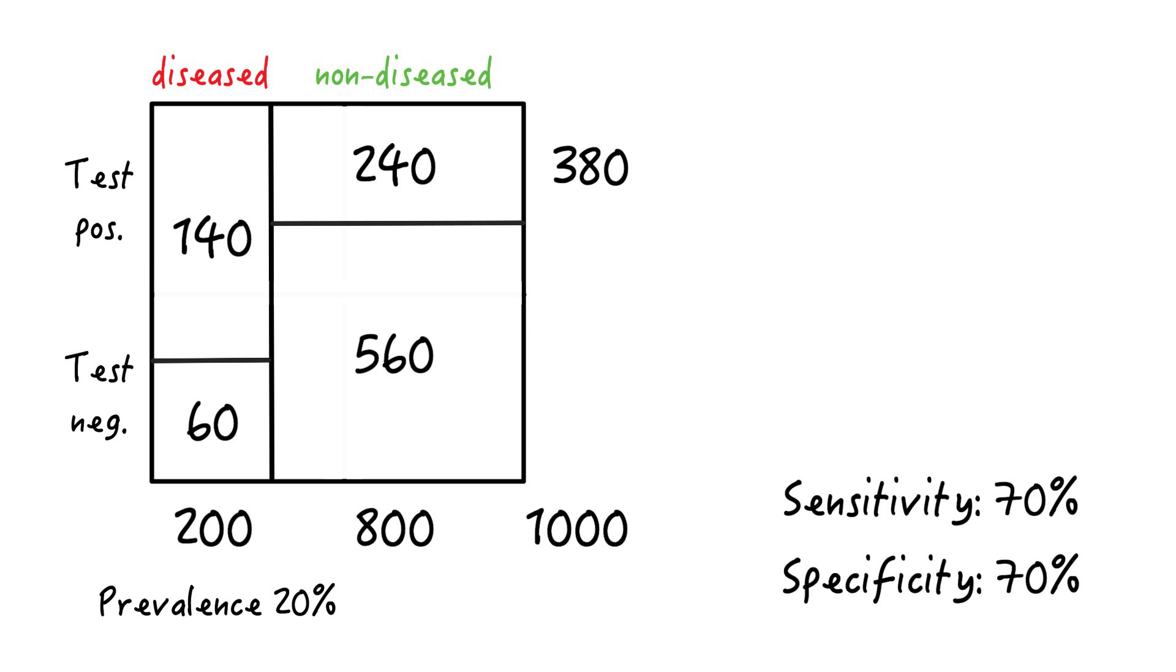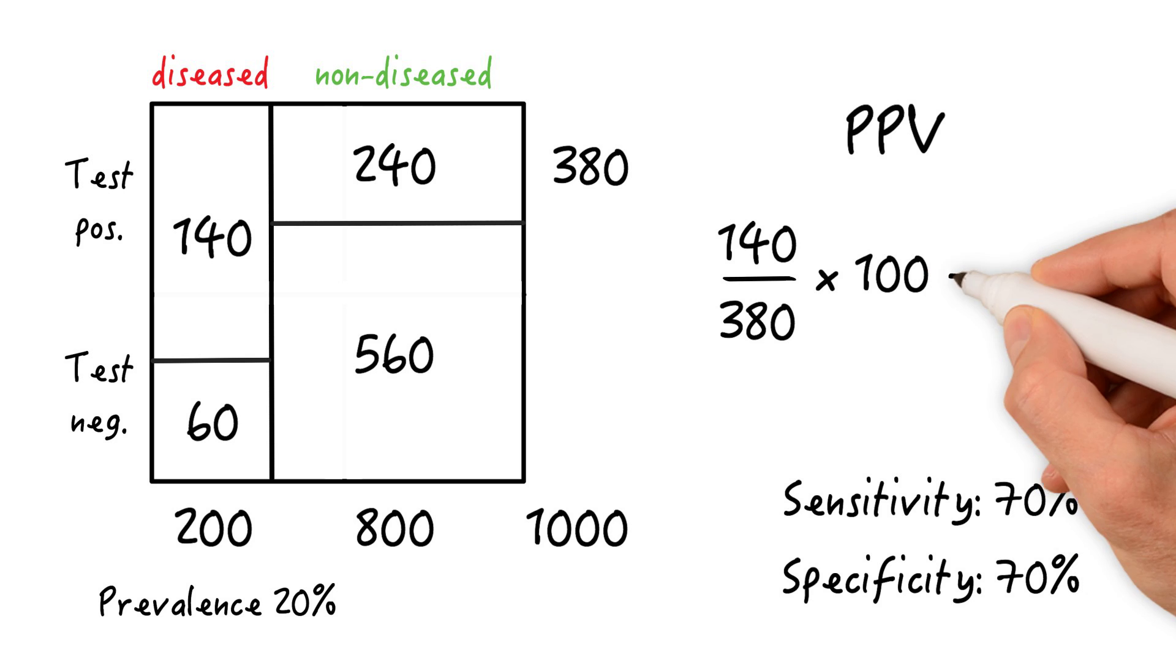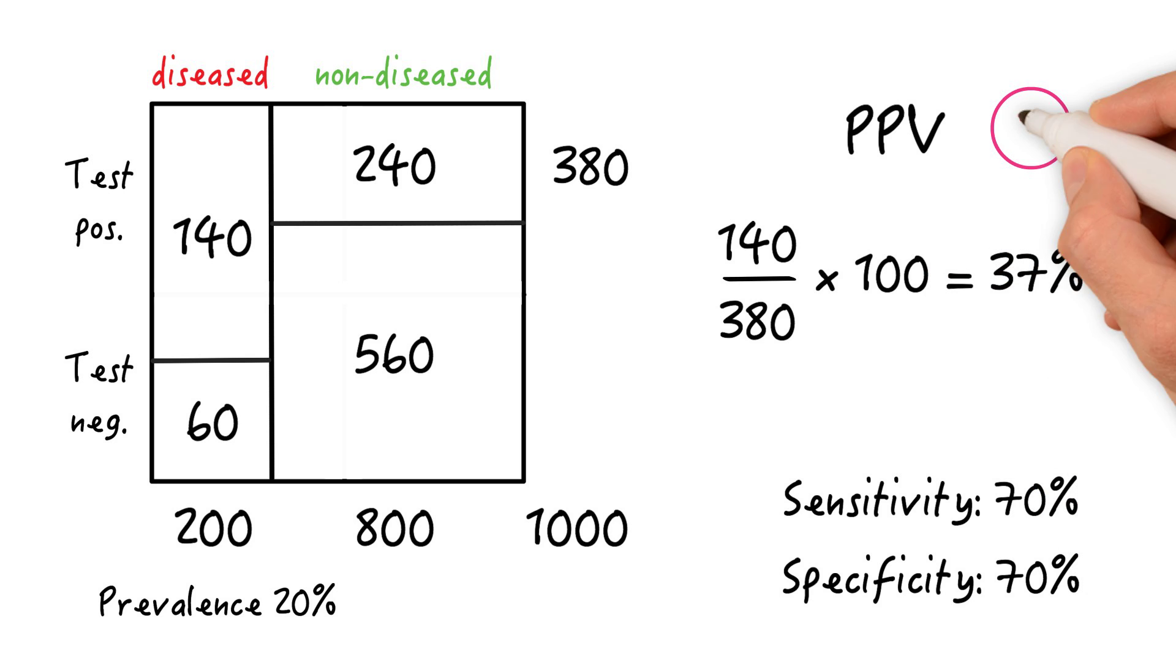Now, let's calculate the positive predictive value. That's 140 true positives divided by 380 who tested positive, times 100 equals 37%, so pretty bad.